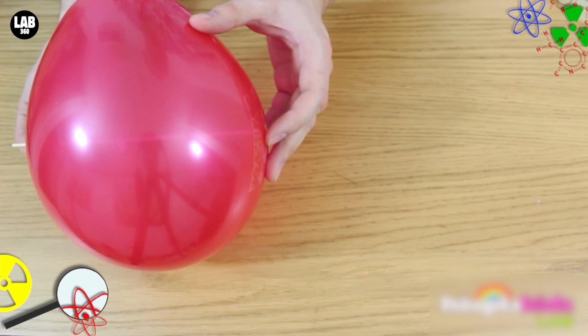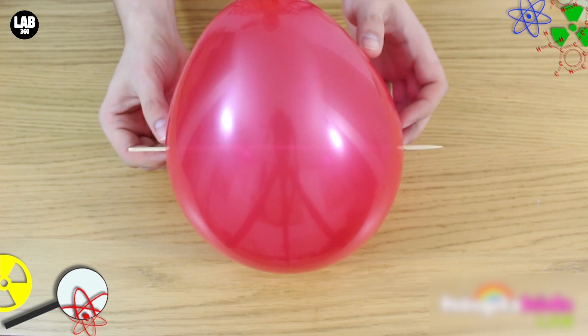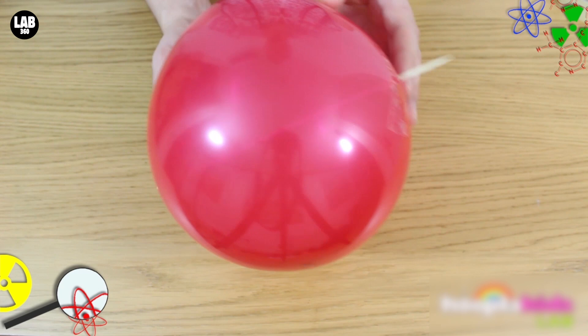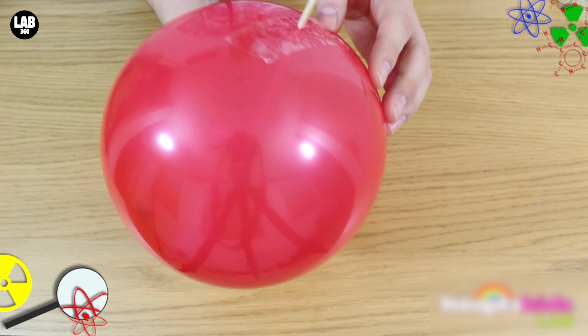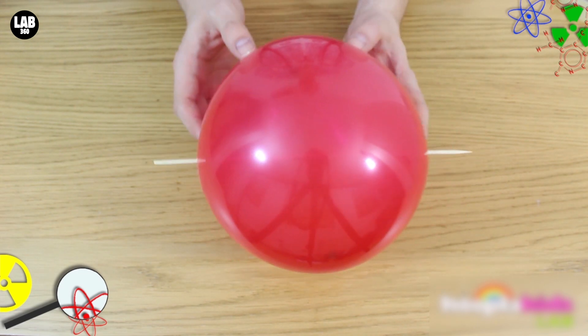This is because the surface of the balloon is made of rubber, which tends to cling very tightly. There's already surface tension in the balloon because you've blown it up, and so when you push the skewer through the side, the rubber clings and sticks to the outside of the skewer, meaning air is not able to escape.